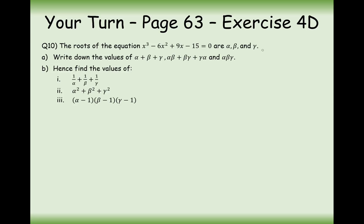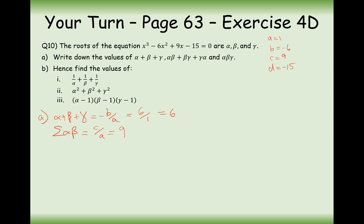Alright then, so in this cubic expression we have a equals one, b equals minus six, c equals nine, and d equals minus fifteen. Write down the values of alpha plus beta plus gamma, the sum of the doubles, and the triple. Alpha plus beta plus gamma equals minus b over a, which is six over one, so six. The sum of the doubles equals c over a, which is nine over one, so nine. And alpha beta gamma equals minus d over a, so that's fifteen over one, giving fifteen.